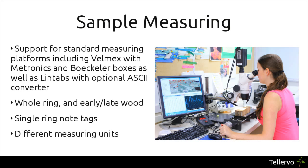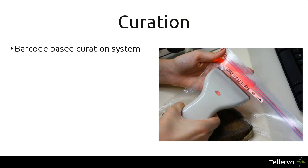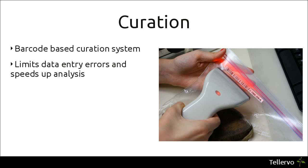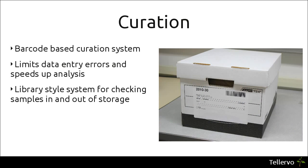It can also seamlessly handle different measuring units. Televo includes a barcode-based curation system for helping you keep your collection organised. This barcoding helps limit data entry errors and also speeds up your analysis. It also includes a library-style system for checking your samples in and out of your storage area.